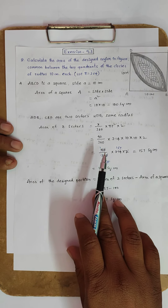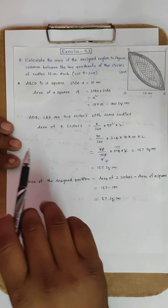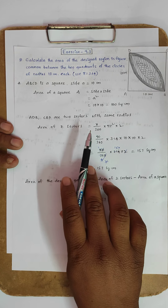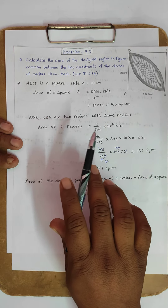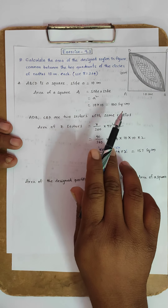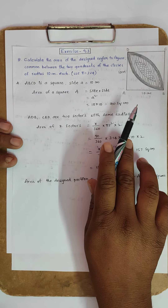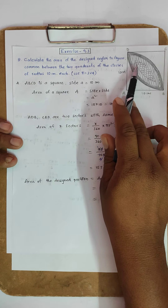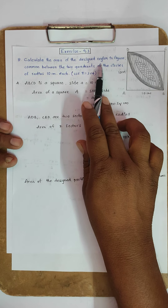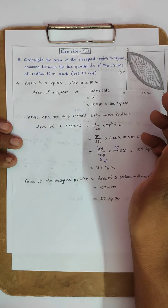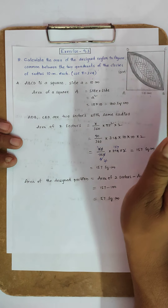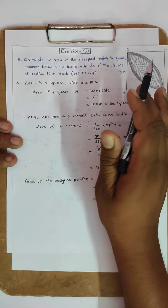Now, the last problem in this exercise: calculate the area of the design region common between two quadrants of circles of radius 10 cm each. For diagrams like these, we don't have a direct formula to find the area directly.